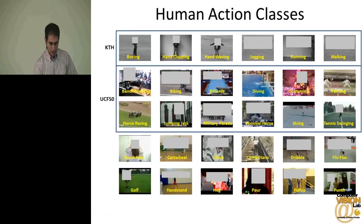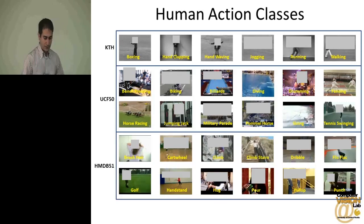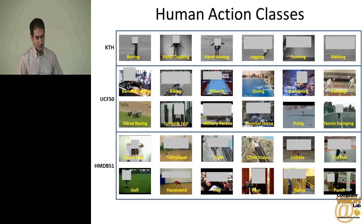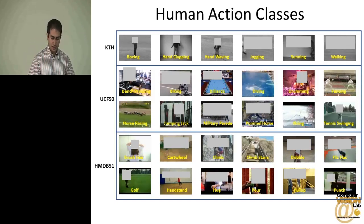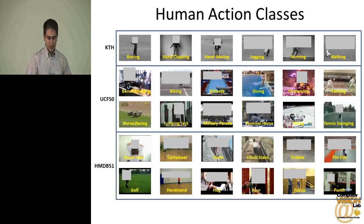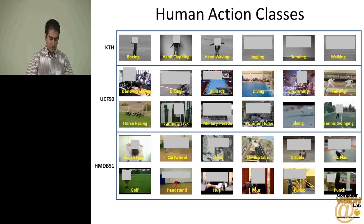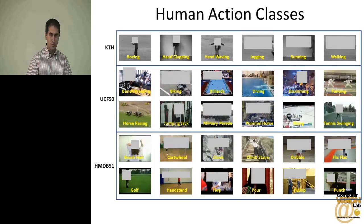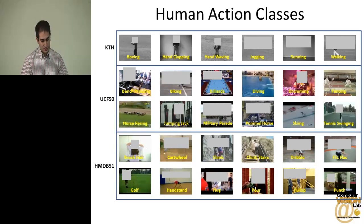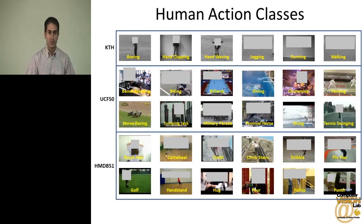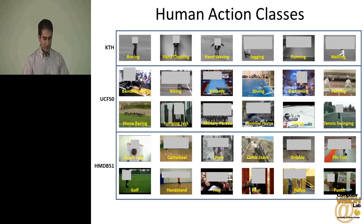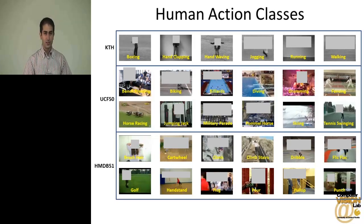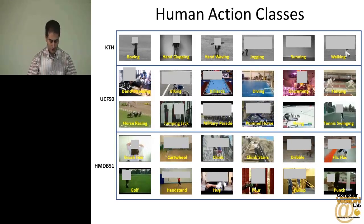In this paper we like to classify human actions. In the first row you see the KTH dataset, which has six action classes and each action is performed by 25 actors. This is a pretty simple dataset compared to UCF50 and HMDB51. KTH videos are taken in a controlled environment with a simple background, whereas UCF50 and HMDB51 videos are collected from online sources such as YouTube and are diverse.